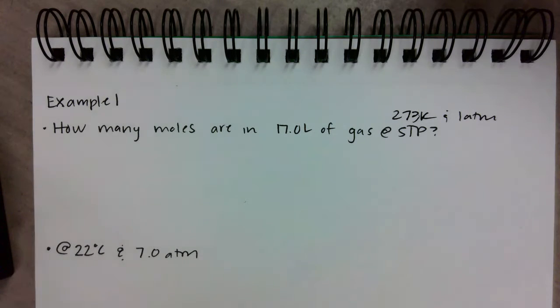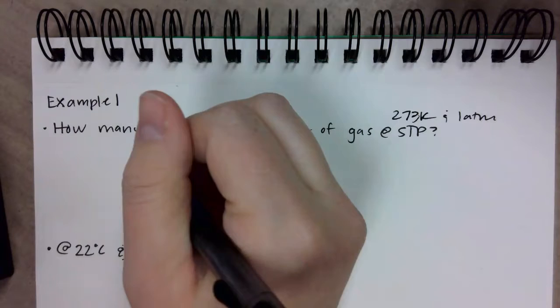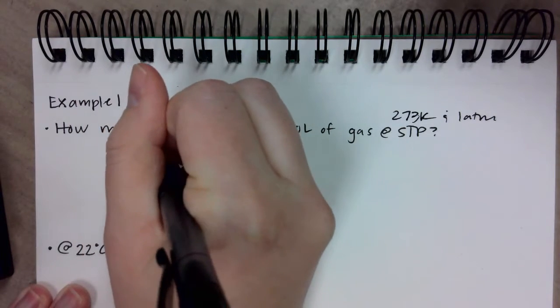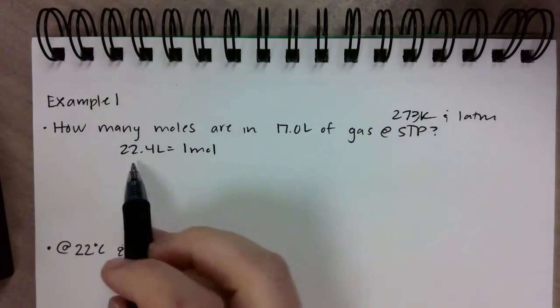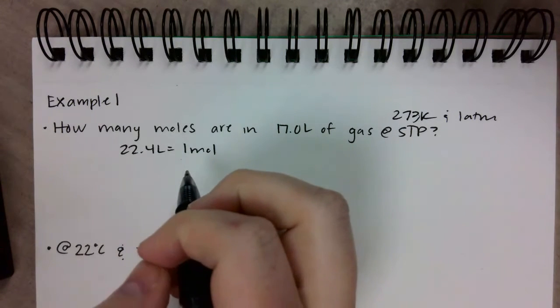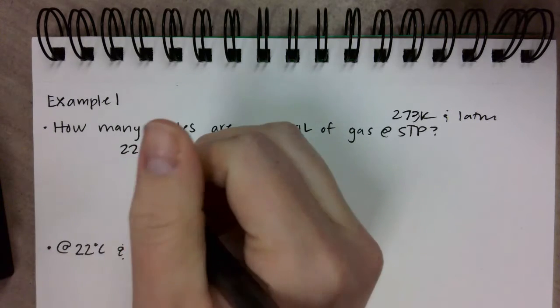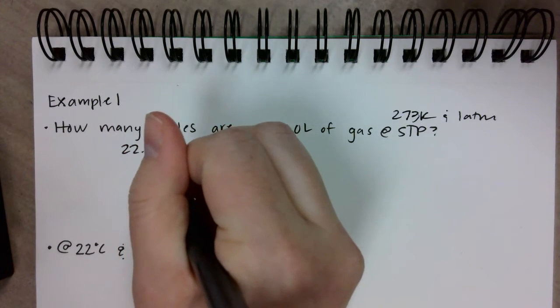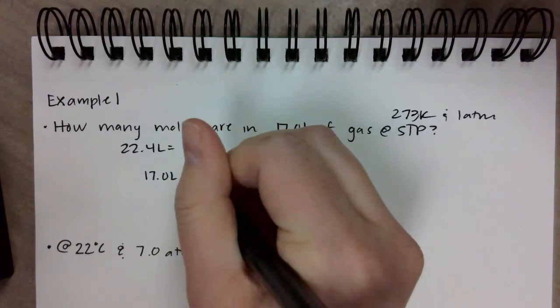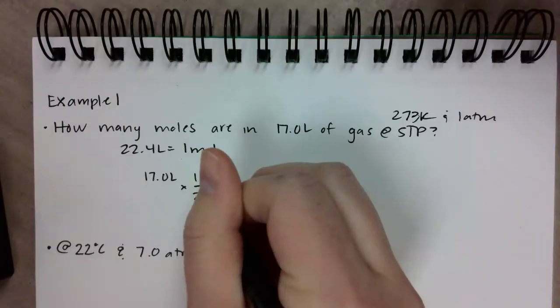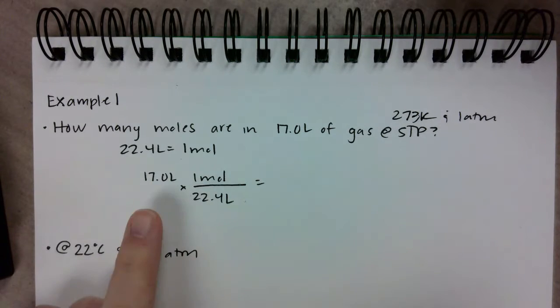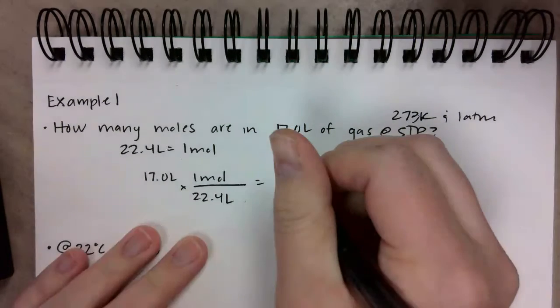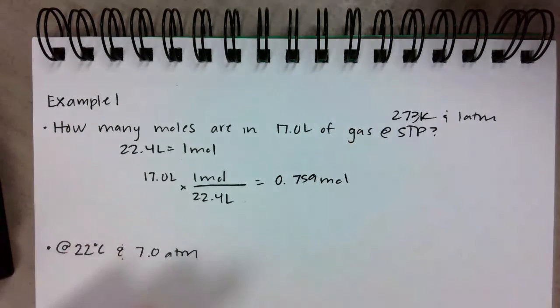If you recognize that it is at STP, your life is super easy because 22.4 liters equals one mole of any gas at STP. You can use this as a conversion factor to solve for your number of moles. If I have 17.0 liters, and I know that for one mole of gas it's 22.4 liters, literally all I have to do is divide. I'm gonna take 17 divided by 22.4 and I'm gonna get 0.759 moles of gas. That's literally it.